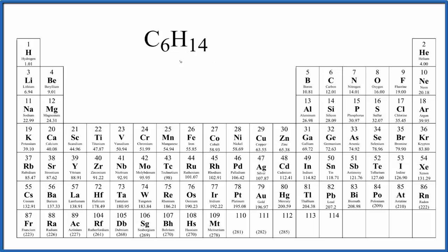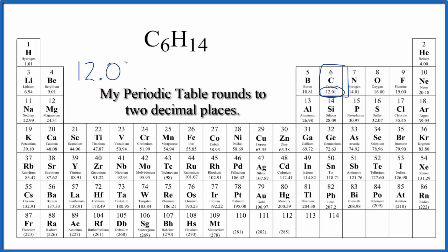So C6H14, the first thing we do, we look for carbon on the periodic table. That's right here. Carbon has an atomic mass of 12.01, and the units are grams per mole, but I won't write that each time. Let's write that at the end.